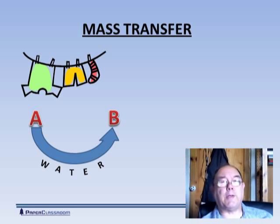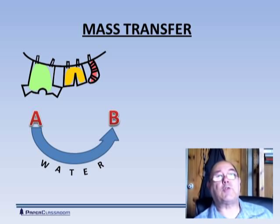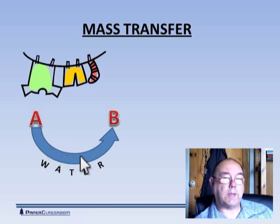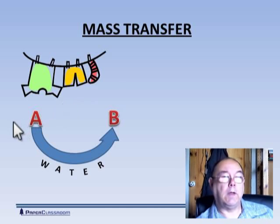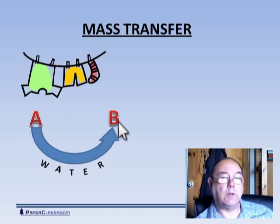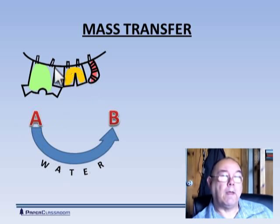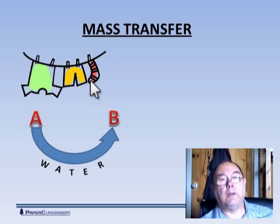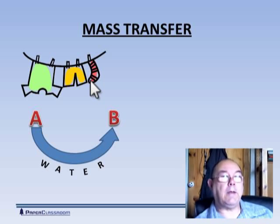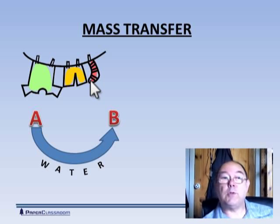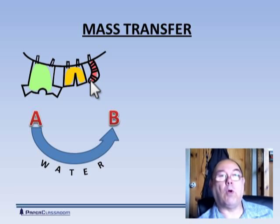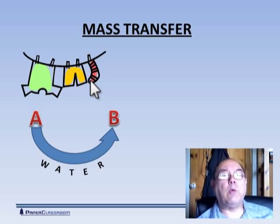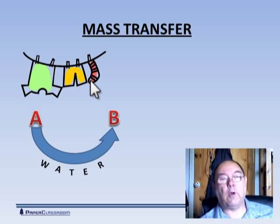Now let's talk about mass transfer. Mass transfer is just a way of saying moving the water from where it is to where you want it to be. And essentially it's just like drying the washing on the line — you do your washing, you peg it out onto the line, and what happens? You get mass transfer. The water evaporates. So it sounds like a technical term, but that's all we're really doing when drying paper.